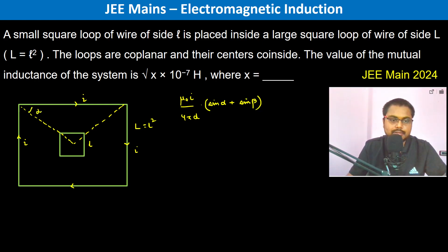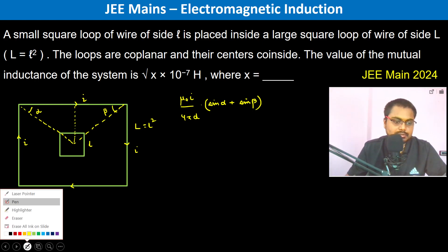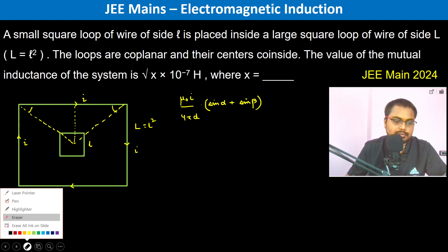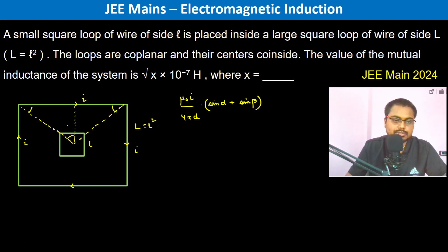I'm sorry, this should be alpha and this is beta. This wire is subtending angles alpha and beta at point P. Now we can clearly see alpha and beta are going to be 45 degrees.